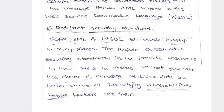Next is redundant security standards. Every company has white hat hackers — ethical hackers who test systems the same way black hat hackers would, in order to identify and rectify vulnerabilities. That is redundant security standards.